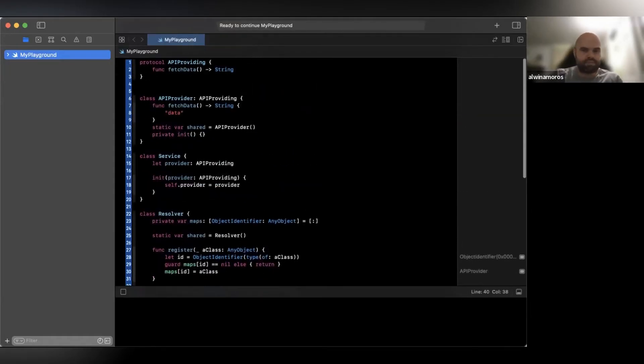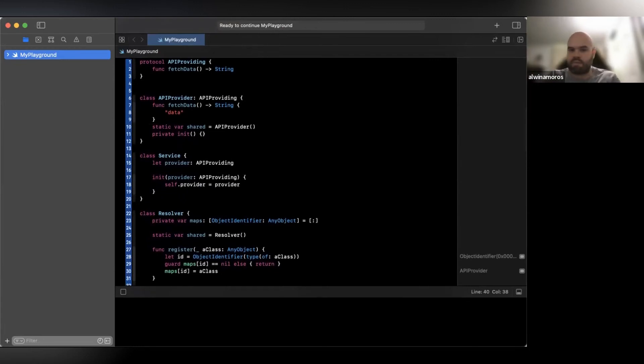Okay, so I created protocol API providing, which should have a function fetch data, which is to give you a string. I create another class API provider, which conforms to API providing.